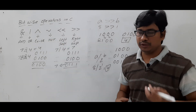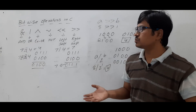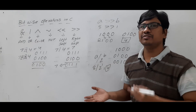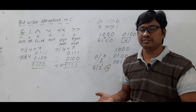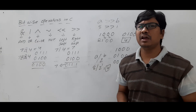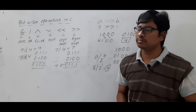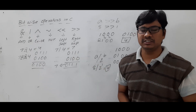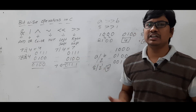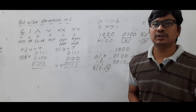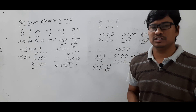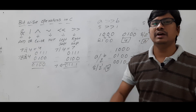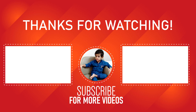So this is all about bitwise operators. We have discussed bitwise AND, OR, exclusive OR, NOT, left shift, and right shift. If you still have any doubts related to this concept, feel free to ask me in the comment section. I will try to clear your doubts as early as possible. Thank you for watching the complete video, have a nice day.